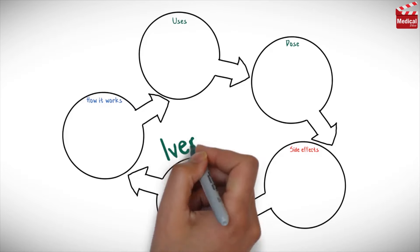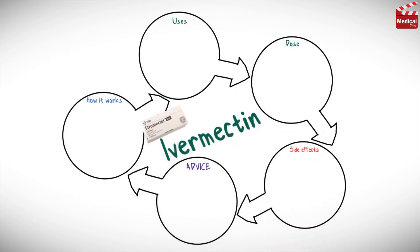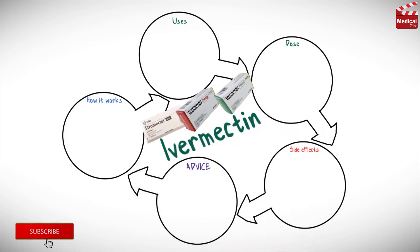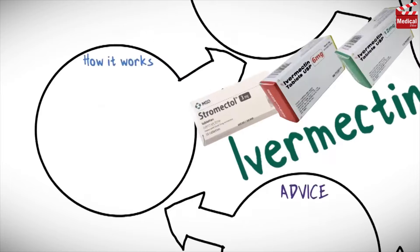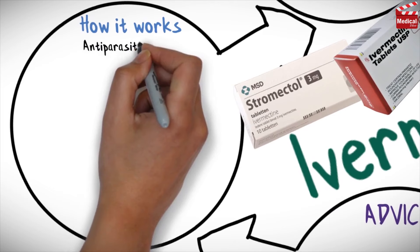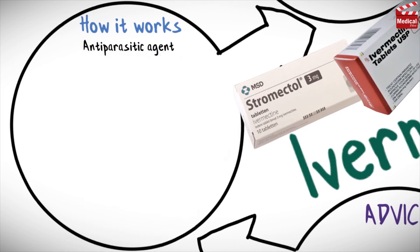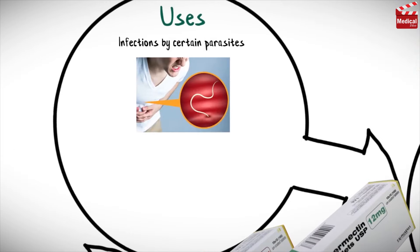In this video we'll briefly discuss what ivermectin is and how it works, what it's used for, the dose, and side effects, contraindications and precautions. Ivermectin is an anti-parasitic agent used to treat infections in the body caused by certain parasites.